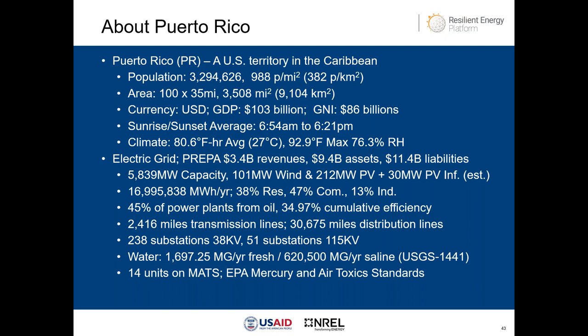PREPA has 2,460 miles of transmission lines, about 31,000 miles of distribution lines, 238 substations at 38 kV, 51 substations at 100 kV, and 5.8 gigawatts of generating capacity. Puerto Rico consumes about 70,000 gigawatt-hours of electricity per year: 32 percent residential, 47 percent commercial, and 13 percent industrial. PREPA also has 101 megawatts in wind, 212 megawatts in PV, 2.4 megawatts from landfill gas, and an estimated 30 megawatts of additional informal PV installed.